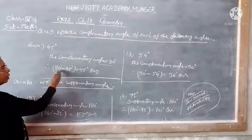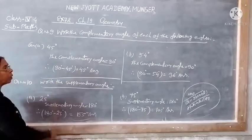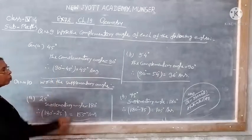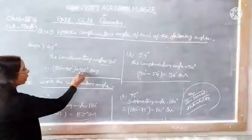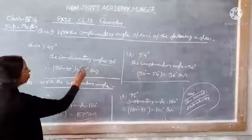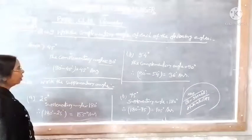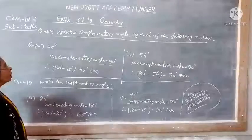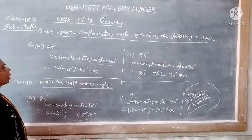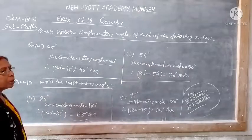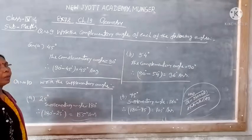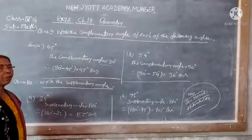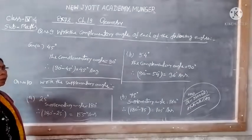And here, we get the complementary angle of 45 degrees. Question number 9, parts 2 onwards — you will be able to make those as your homework.